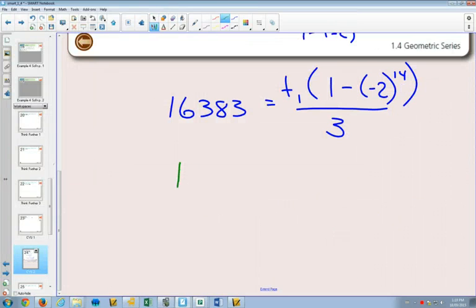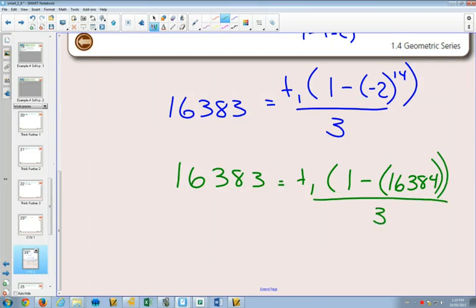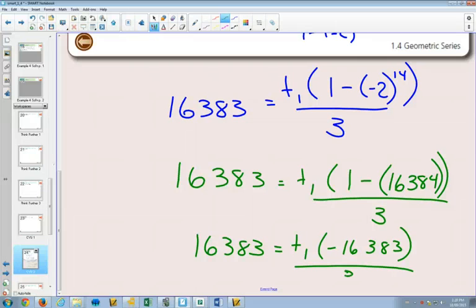So we have 16,383 equals term 1, 1 minus - and this part here is positive 16,384, all divided by 3. So we're going to get 16,383 equals term 1, 1 minus, that'll be negative 16,383, divided by 3.